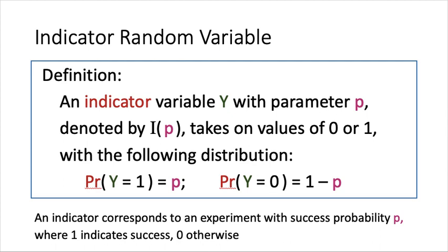In the third part of this lecture, we are going to study or introduce two special random variables. The first one is the indicator random variable, and the definition is as follows.